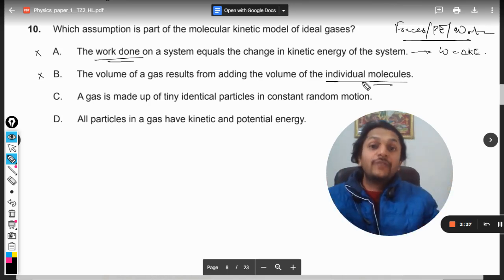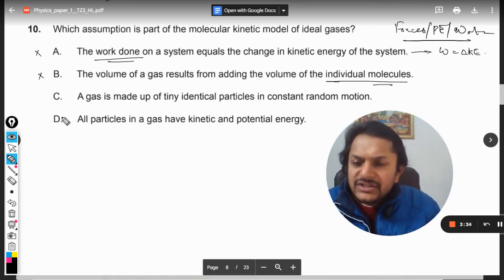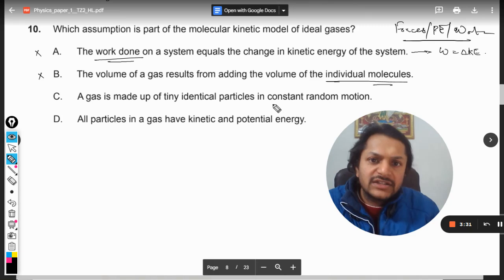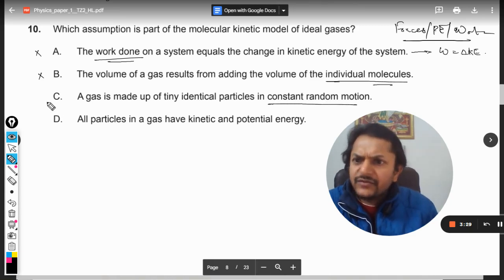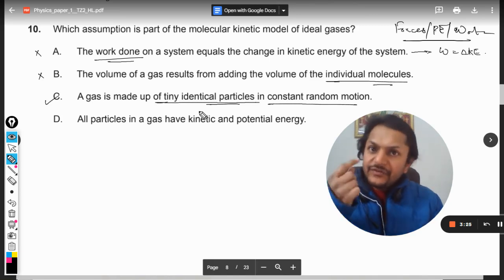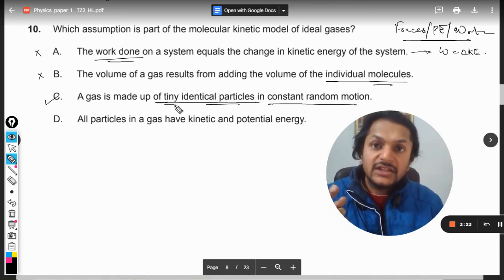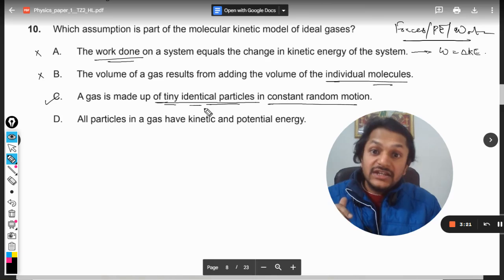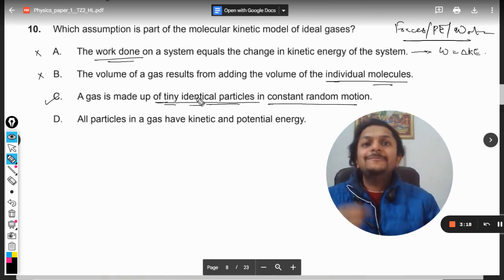Now let's see option C: a gas is made up of tiny identical particles in constant random motion. Yes, of course it is made up of tiny identical particles. So the first assumption is tiny—the volume is negligible—identical particles, so all the molecules of the ideal gas are the same.